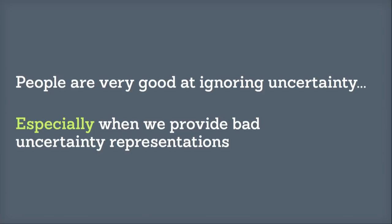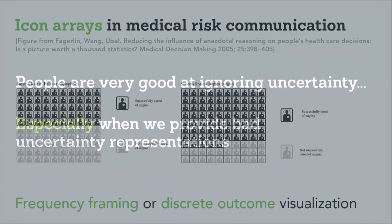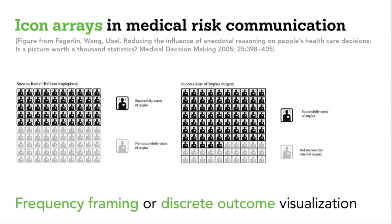Risk communication theaters are not necessarily a new idea — they're essentially icon arrays, an idea for medical risk communication. The idea is that I give you a grid of, say, a hundred or a thousand people representing potential outcomes and color them in proportion to different possible outcomes. Here I'm trying to make a decision between two different treatments for angina. The nice thing is that people can more easily reason about conditional probability — for example, what's the chance of some complication within some group. This is called frequency framing or discrete outcome visualization, and there's growing evidence this is the direction for effective uncertainty visualization.